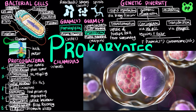Chlamydias can only survive within animal cells. One species, called Chlamydia trachomatis, is the most common cause of blindness in the world. It also causes non-gonococcal urethritis, a sexually transmitted disease that causes inflammation of the urethra.